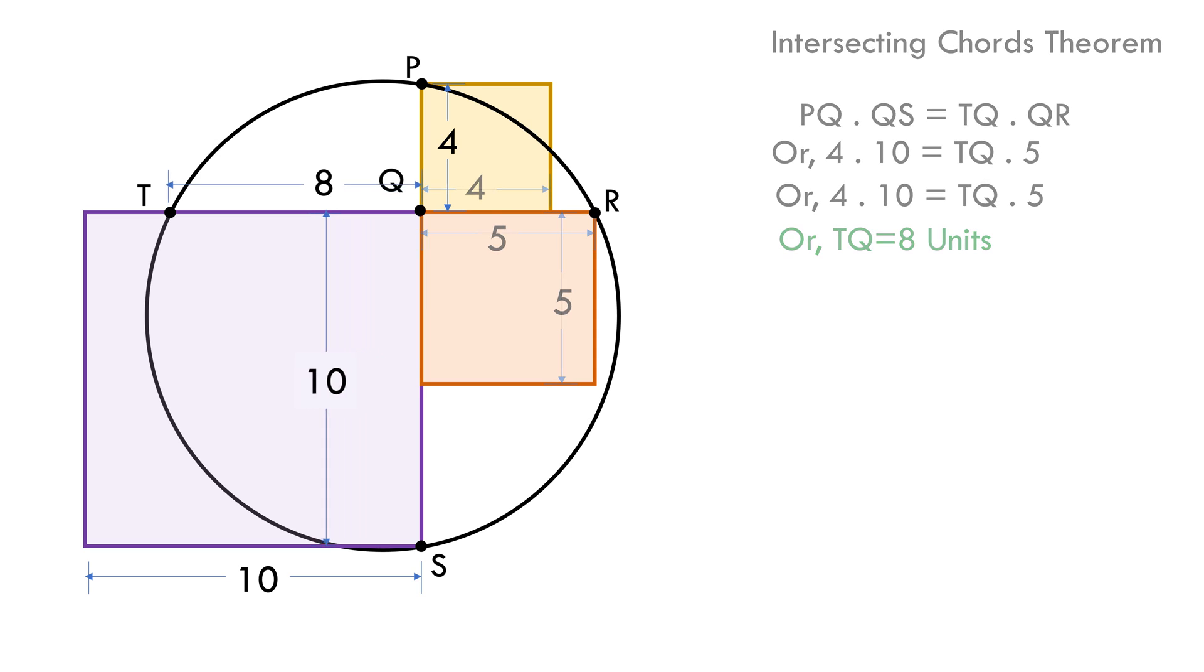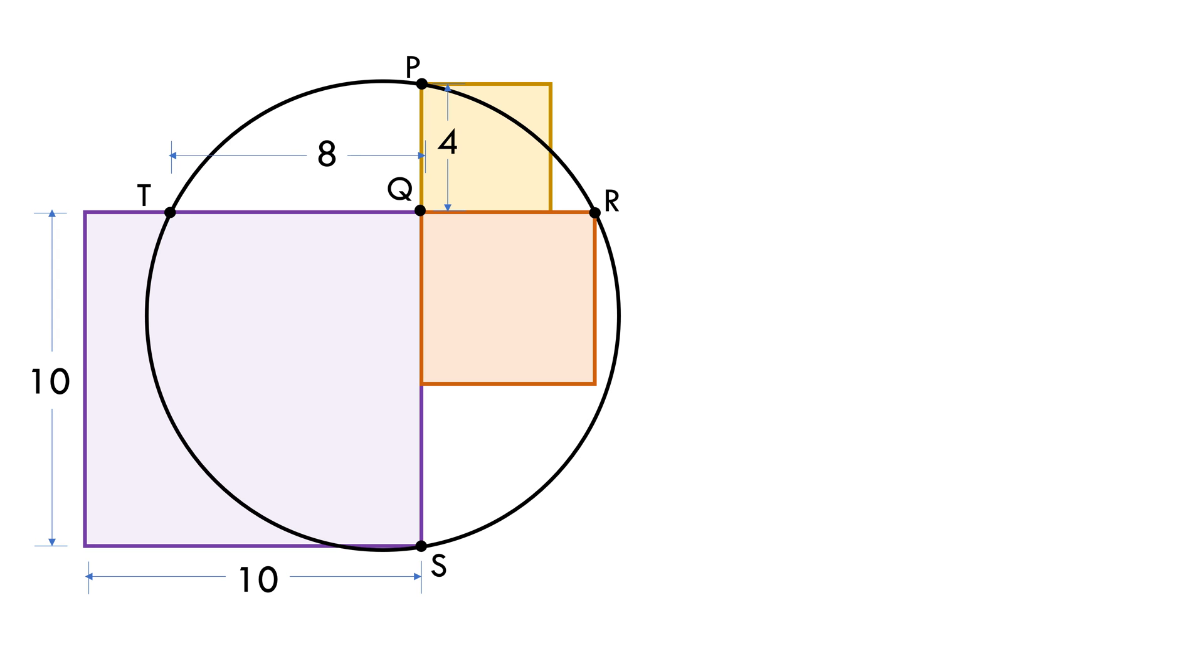Now the next step would be to assume O to be the center of the circle. Now let's drop a line OA perpendicular to PS. Here PS has been given to be 10 plus 4 equals 14 units. Because OA is a line dropped from the center of the circle and is perpendicular to the chord, OA bisects PS. Therefore PA equals half of 14 equals 7 units.